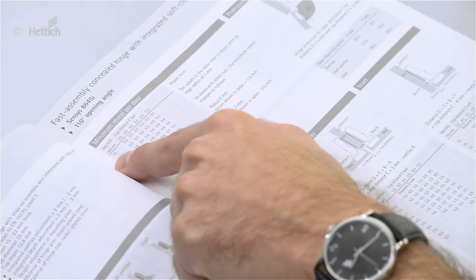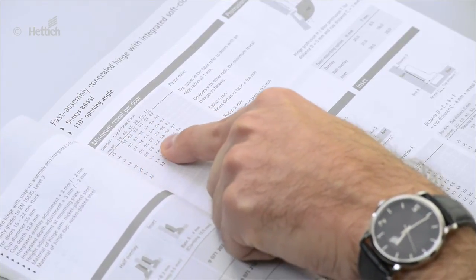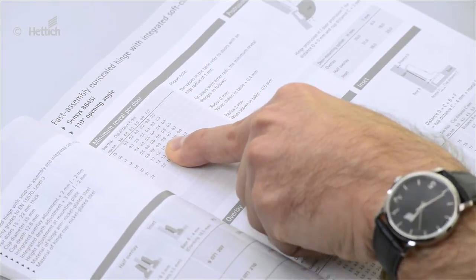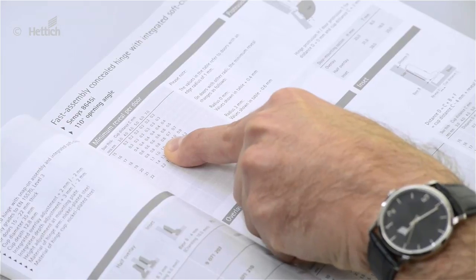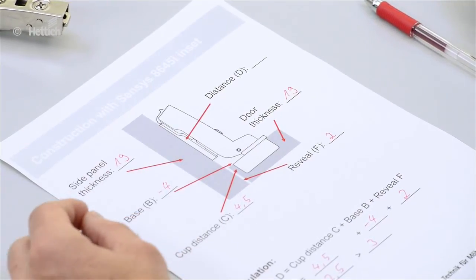The door thickness in the example was given as 19 millimeters and the cup distance C as 4.5 millimeters. So the minimum reveal is 0.8 millimeters. In the example we had 2 millimeters, so the application can be realized.